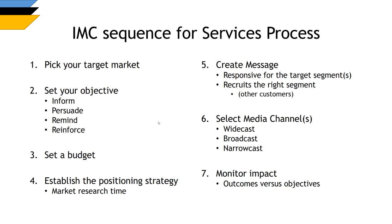Step five: once you know who you're targeting, what you want to do, how much money you've got, and where you currently exist in the minds of consumers, then you can start making a message. How do you make a message that is selective for the target market of interest, and they'll respond in a mostly uniform way — sufficiently uniform to have made them a valid and viable target market? Your message will sometimes go out to people who aren't your target market, so it shouldn't be detrimental to partners or to society at large.